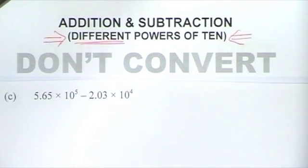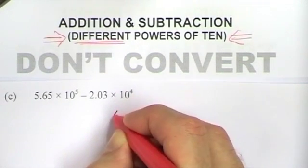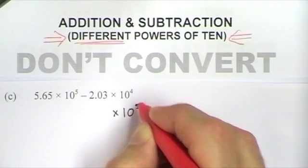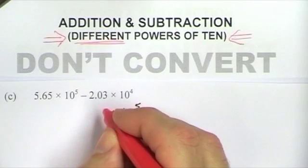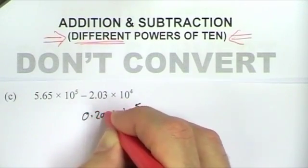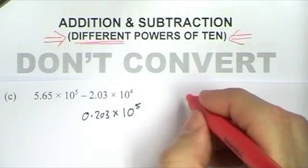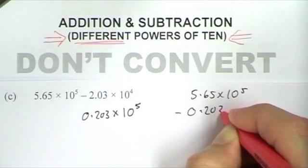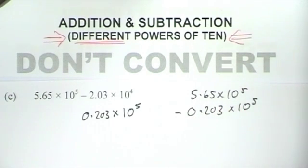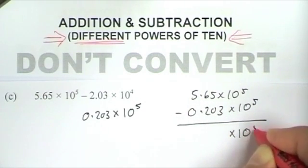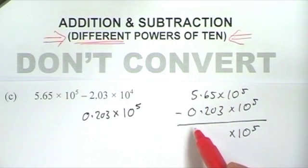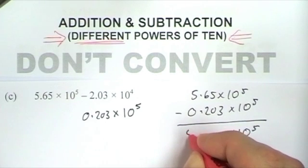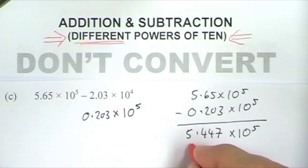In this next question I'm subtracting. The powers of 10 are different, so I've got to make them the same. The largest power of 10 is 10 to the 5, so I make the smaller number into a 10 to the 5 — that 10 to the 4 increases by a power of 10. So the first part of the number must decrease by a power of 10 to make it 0.203. I'm going to have 5.65 times 10 to the 5 take away 0.203 times 10 to the 5. And 5.65 take away 0.203 gives me 5.447 times 10 to the 5.